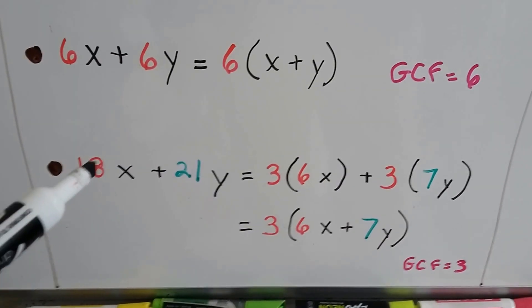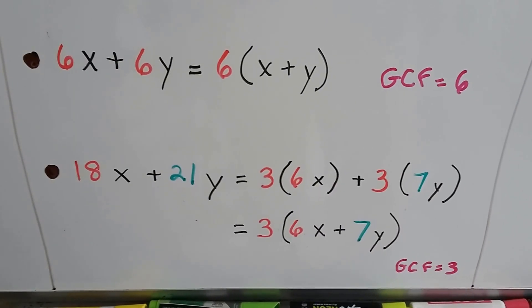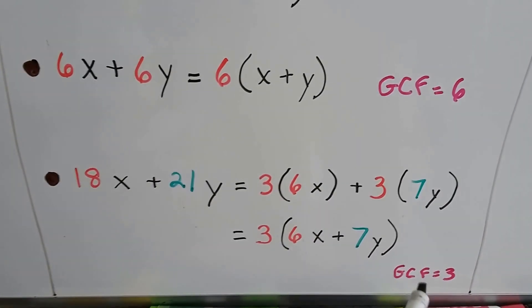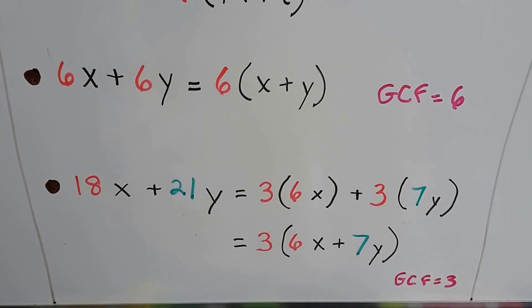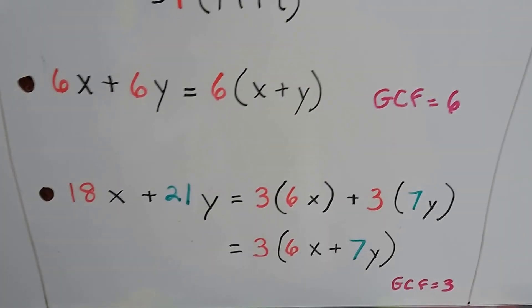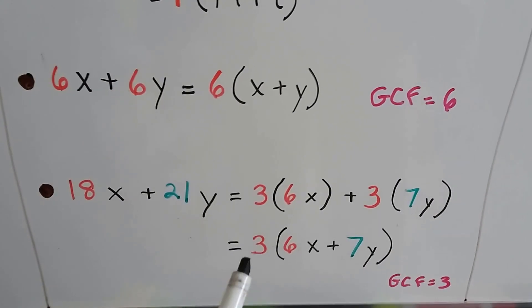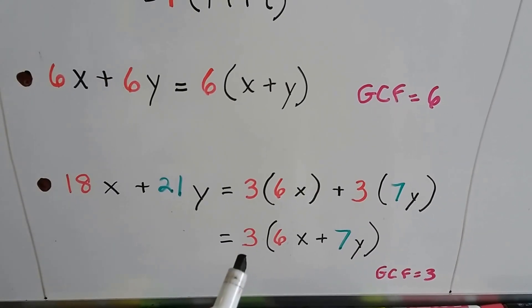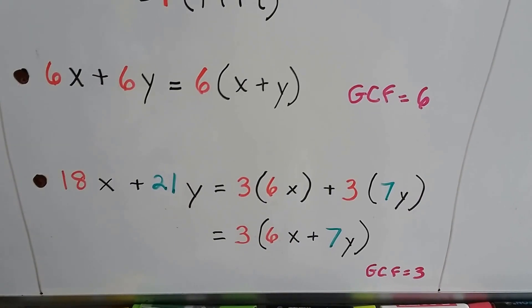For 18x plus 21y, the 18 and the 21 both have a 3 in common. That's the greatest common factor, the GCF. We can do 3 times 6x plus 3 times 7y. And because they have the 3 in common, we can make it 3 times 6x plus 7y.